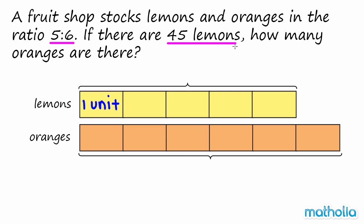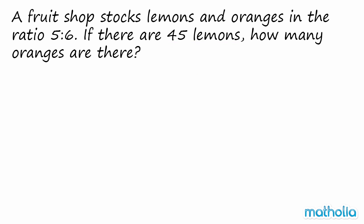We know there are 45 lemons. To find the number of oranges, we must first find the value of 1 unit. We can do this by dividing 45 by 5. 45 divide 5 equals 9. This is the value of 1 unit.